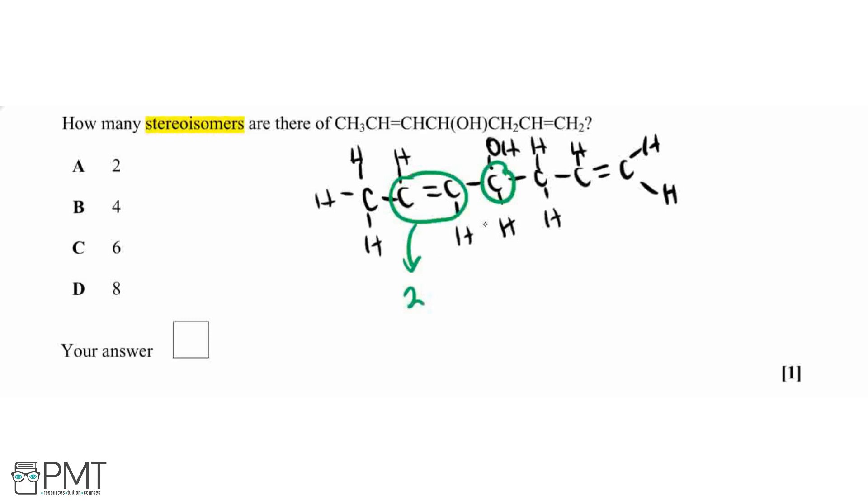So in total we've got two stereoisomers from that double bond and two stereoisomers from that chiral carbon centre. Therefore our answer is B, four stereoisomers in total, and that's how you answer this question.